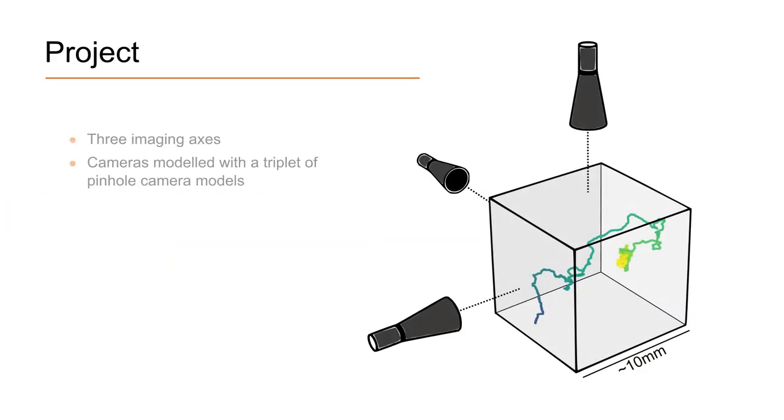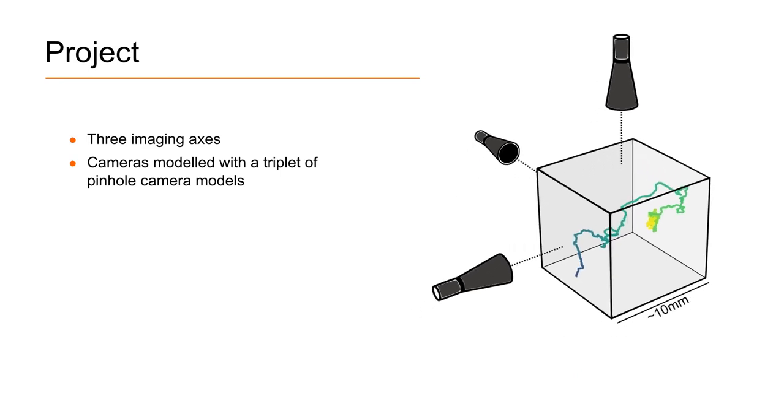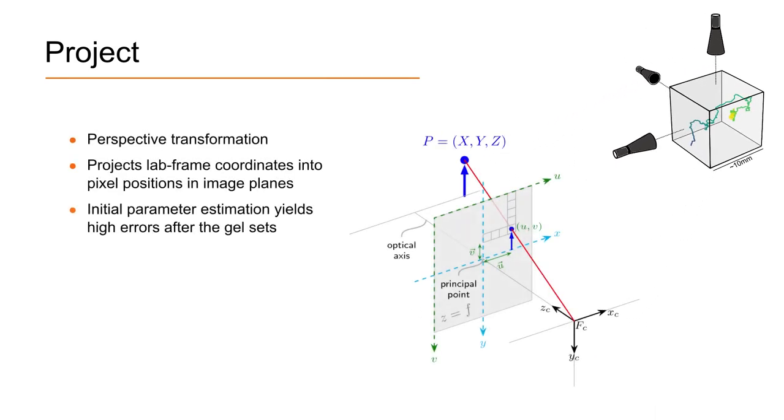The cameras are modeled using a triplet of pinhole camera models with tangential and radial distortion that project 3D points into image planes using perspective transformations. Each pinhole camera model offers a simple and tractable approximation to the true optical transformation.